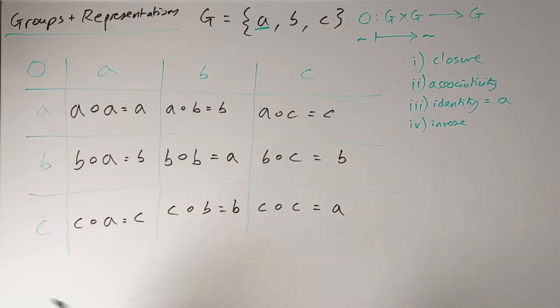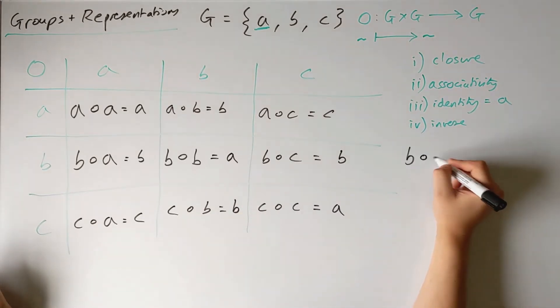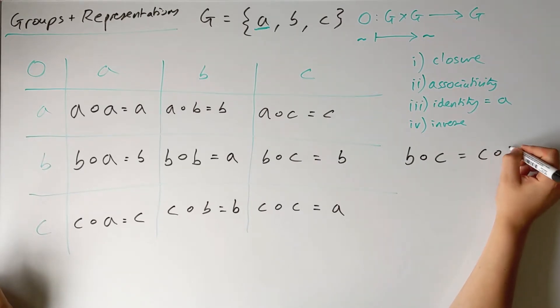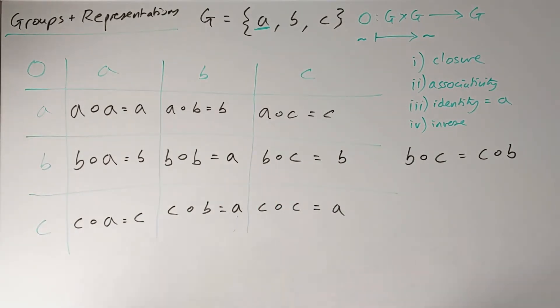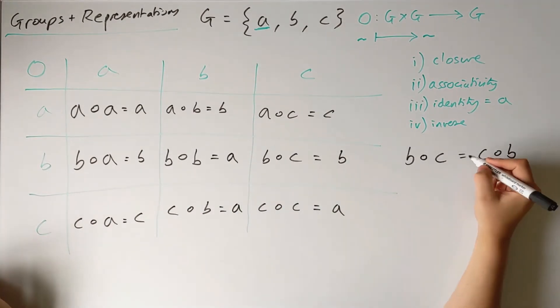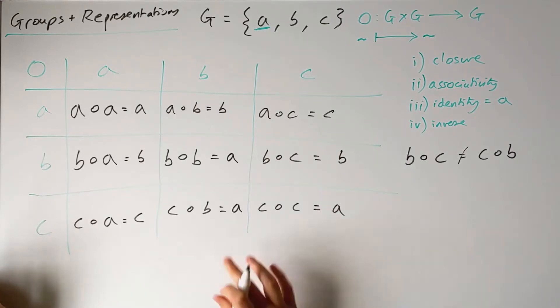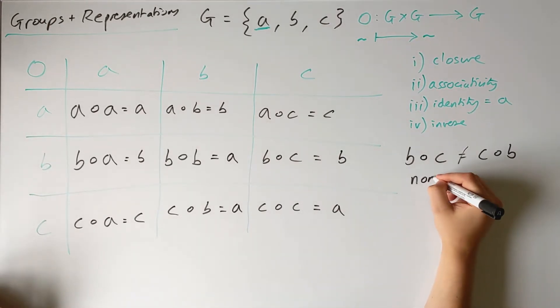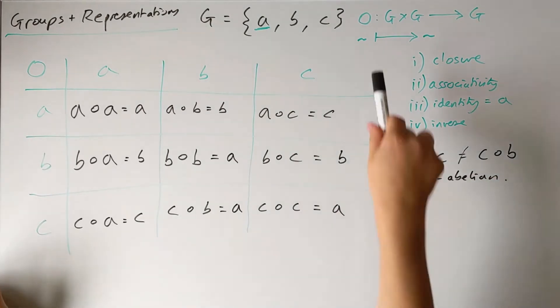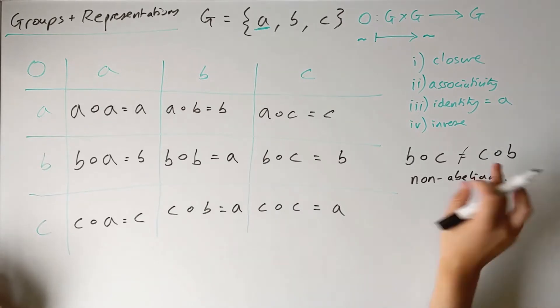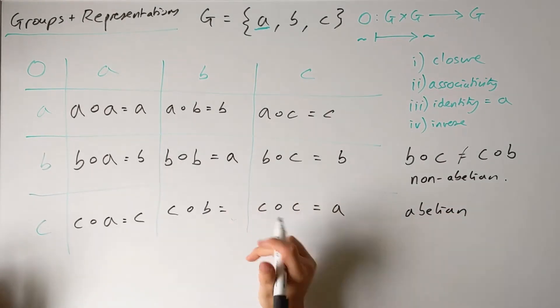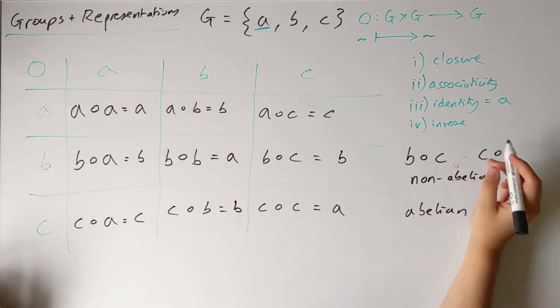Now we come to an observation. This composition table is symmetric about the diagonal, meaning that b compose c is the same thing as c composed with b. This didn't have to be the case. I could have written down something different and we would still have a valid group, but b compose c would not equal c compose b. When this is the case, the group is non-abelian, meaning this composition operation doesn't commute. The other case would be abelian, which is when the composition table is symmetric about the diagonal.